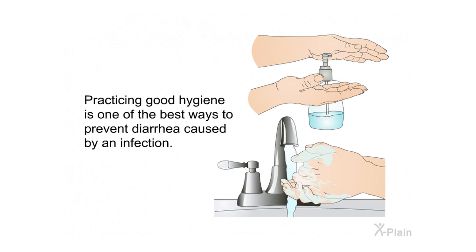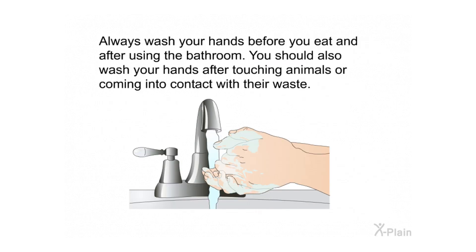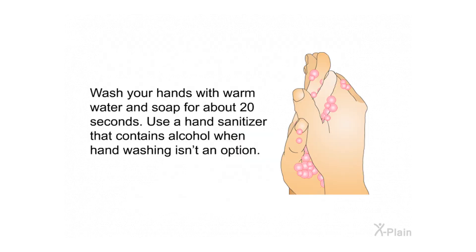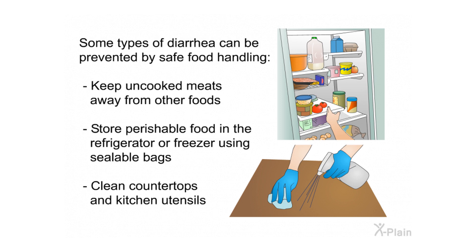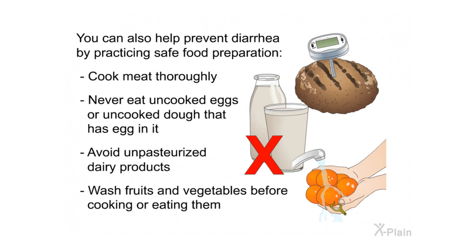Practicing good hygiene is one of the best ways to prevent diarrhea caused by an infection. Always wash your hands before you eat and after using the bathroom. You should also wash your hands after touching animals or coming into contact with their waste. Wash your hands with warm water and soap for about 20 seconds. Use a hand sanitizer that contains alcohol when hand washing isn't an option. Don't let your children put toys or other potentially contaminated items in their mouths, and make sure your children wash their hands frequently.